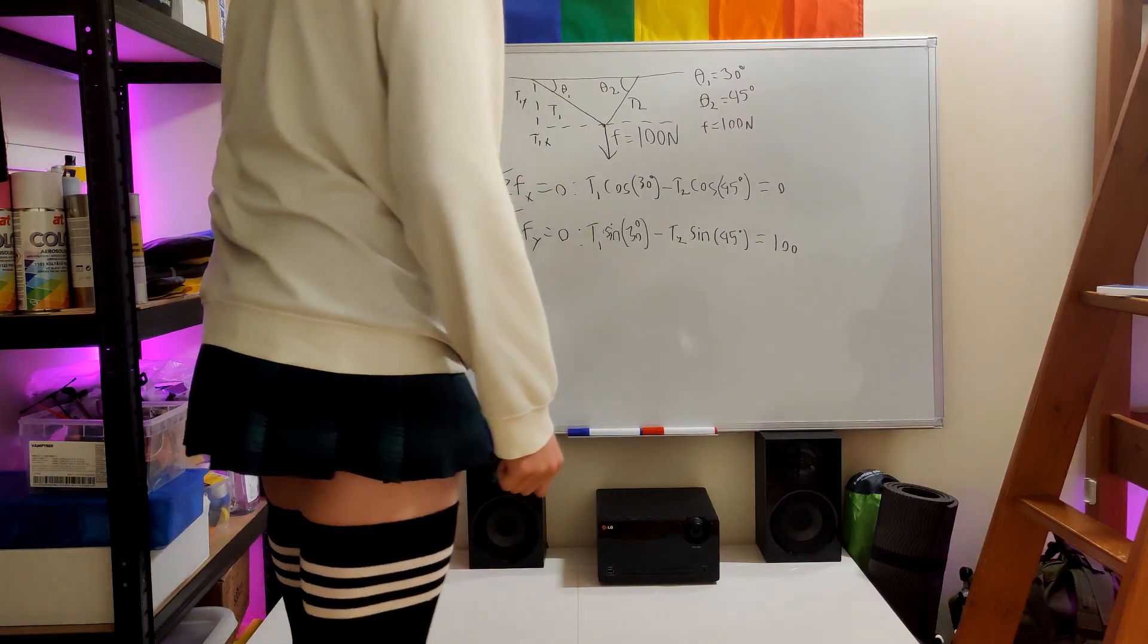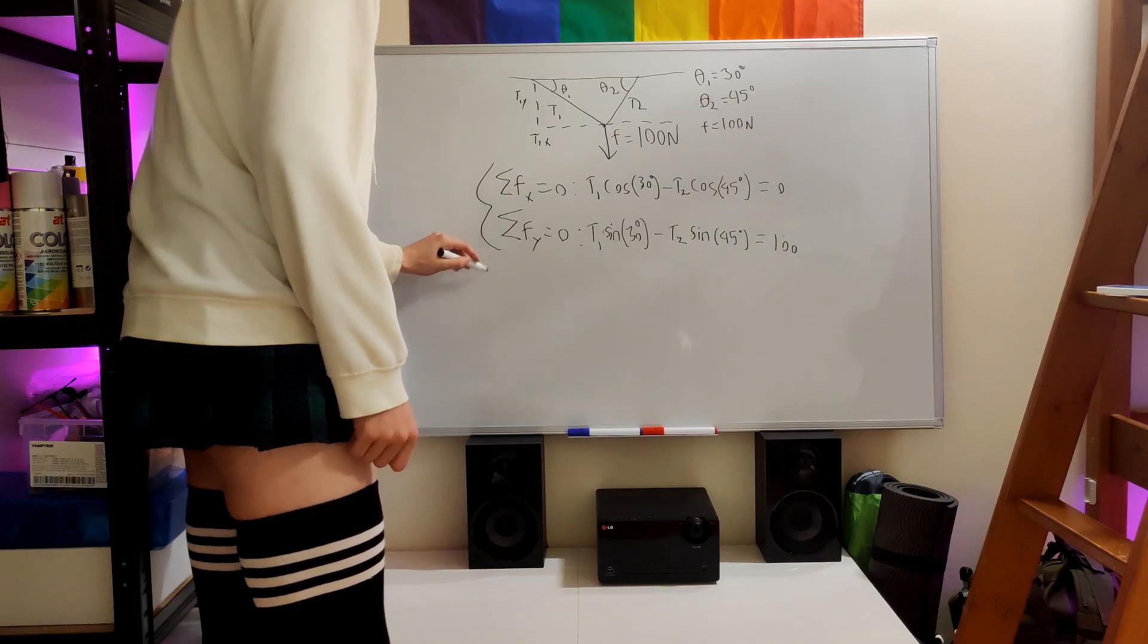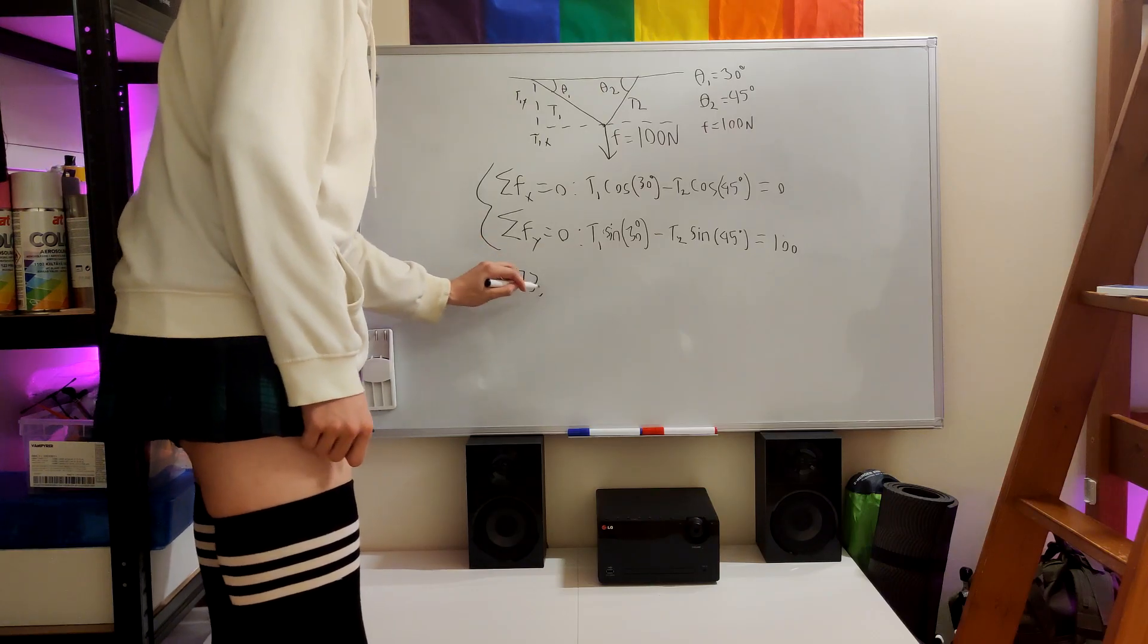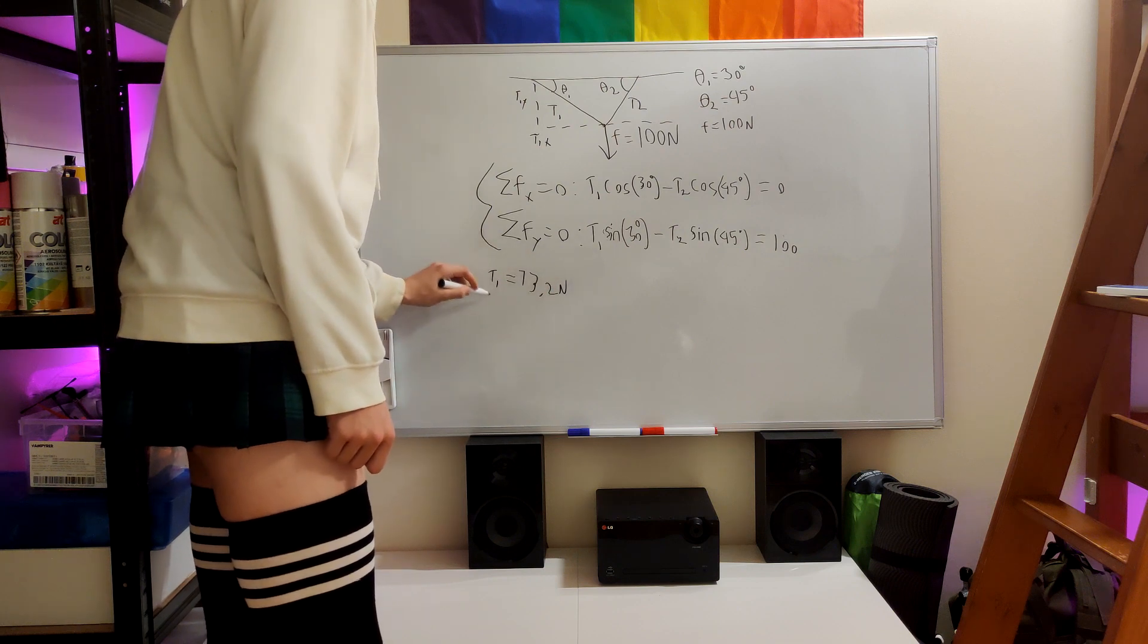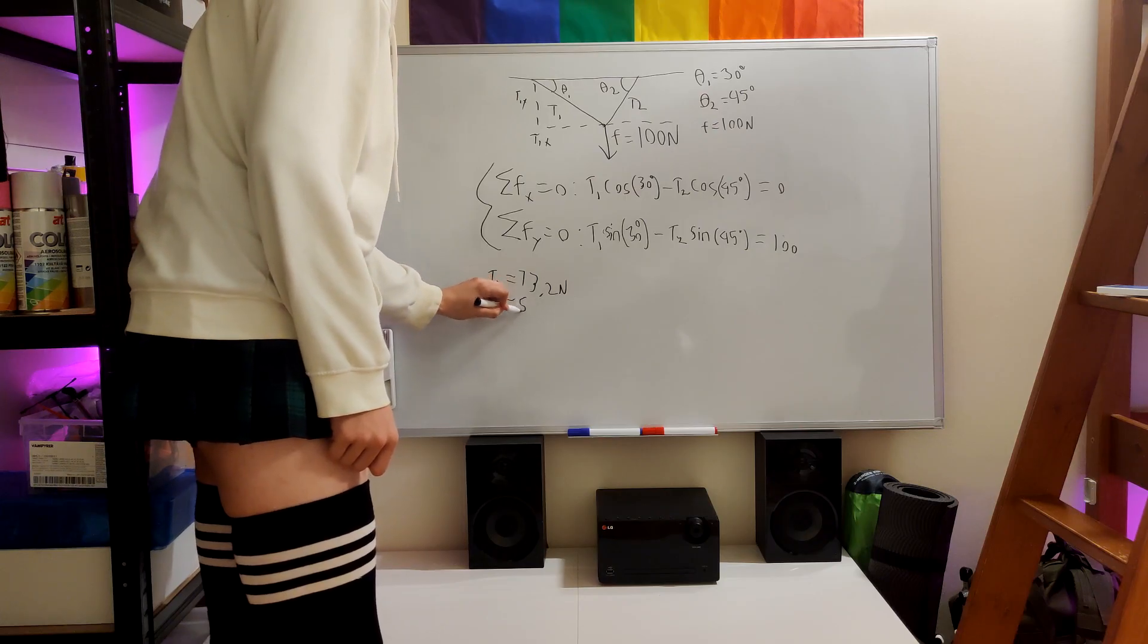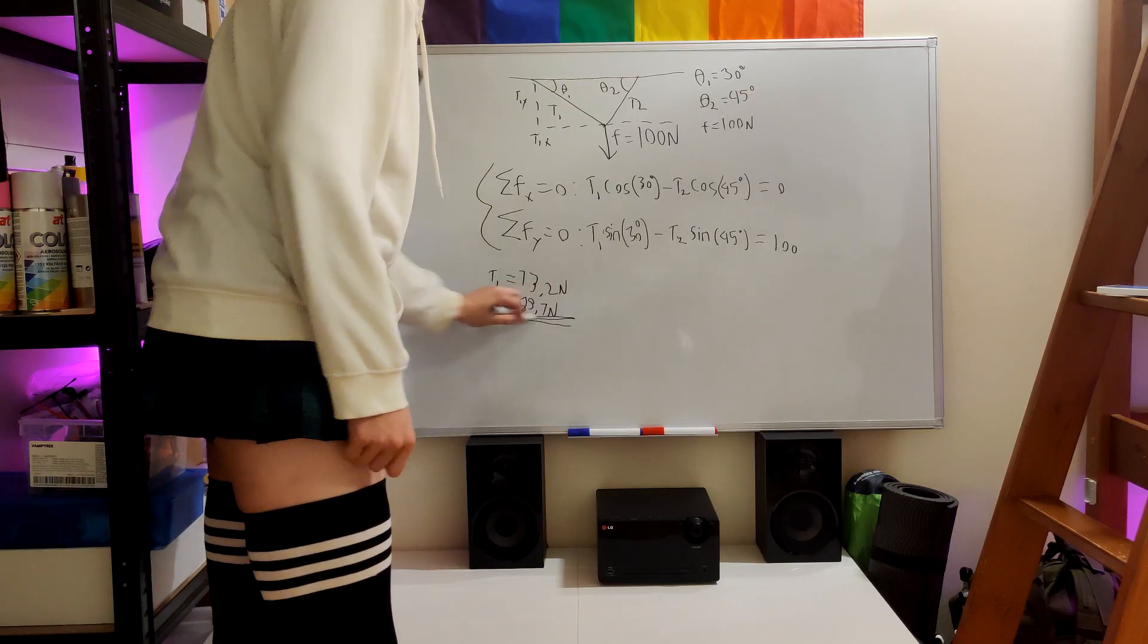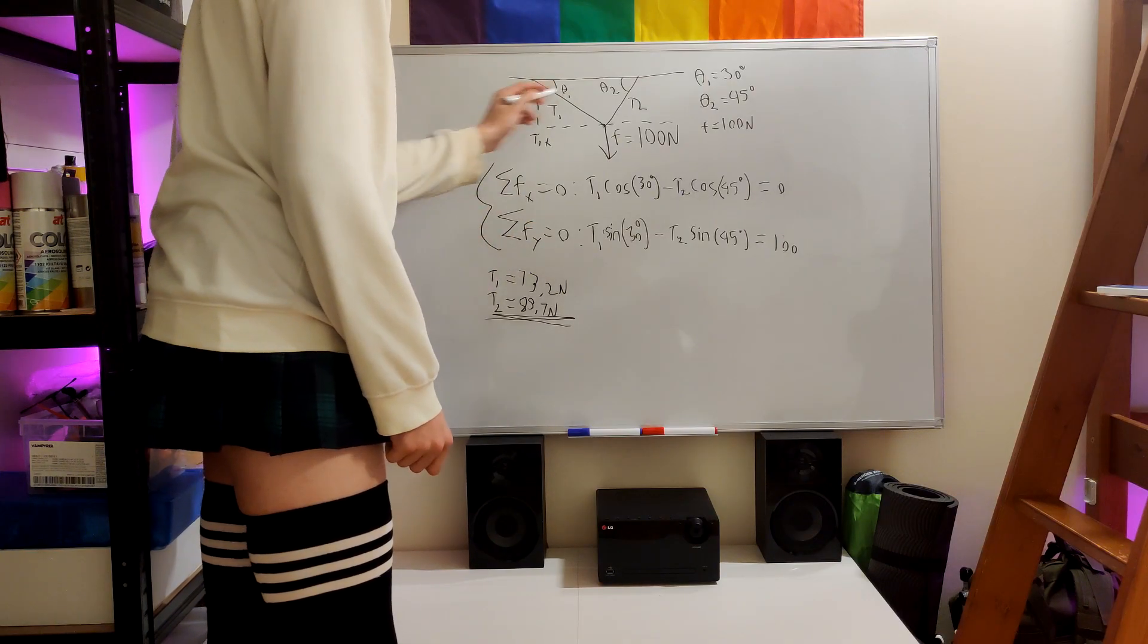So when we put everything into a calculator like TI-Inspire, we're going to get T1 equals 73.2 newtons and T2 equals 89.7 newtons. And here we have it: T1 equals 73.2 and T2 is 89.7.